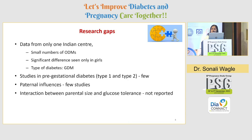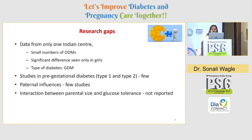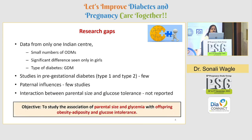There are several research gaps in existing studies: data from only one Indian center with small ODM numbers, significant differences seen only in girls, and studies limited to GDM. Very few studies have examined pre-gestational diabetes (Type 1 and Type 2), few have addressed paternal influences, and the interaction between parental size and glucose intolerance was not reported. Considering these gaps, our study objective is to examine the association of parental size and glycemia with offspring obesity, adiposity, and glucose intolerance.